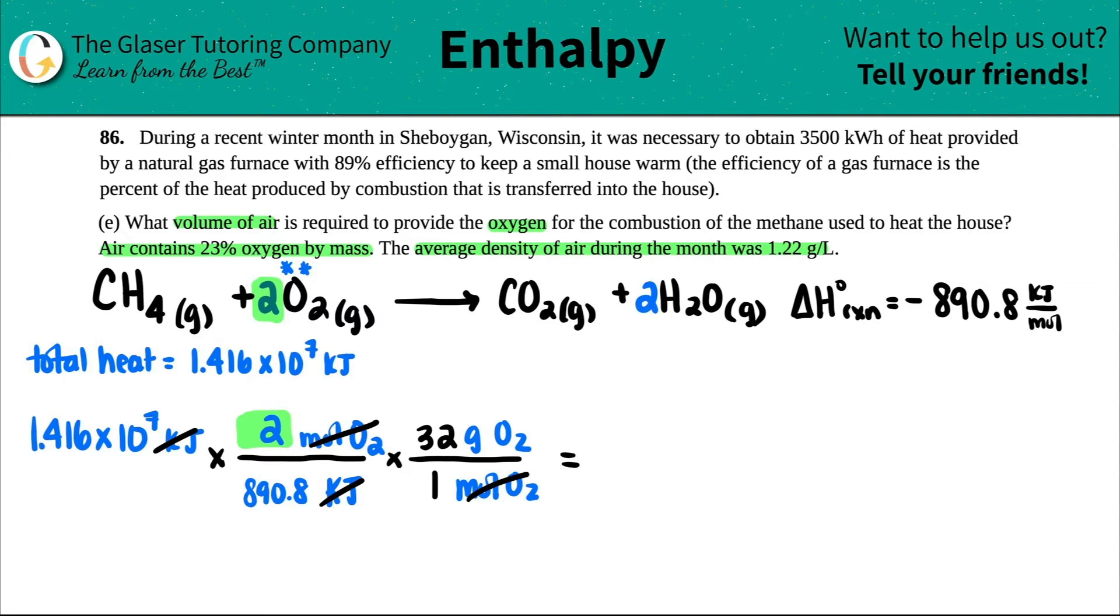I'm just going to get my calculator. I'm going to do 1.416 times 10 to the 7th times 2 divided by 890.8 times 32. A lot of grams, but that kind of makes sense. Maybe I will cut it off after a couple numbers. 1.017, maybe I'll just say 1.0173 times 10 to the 6. And that's grams of O2.